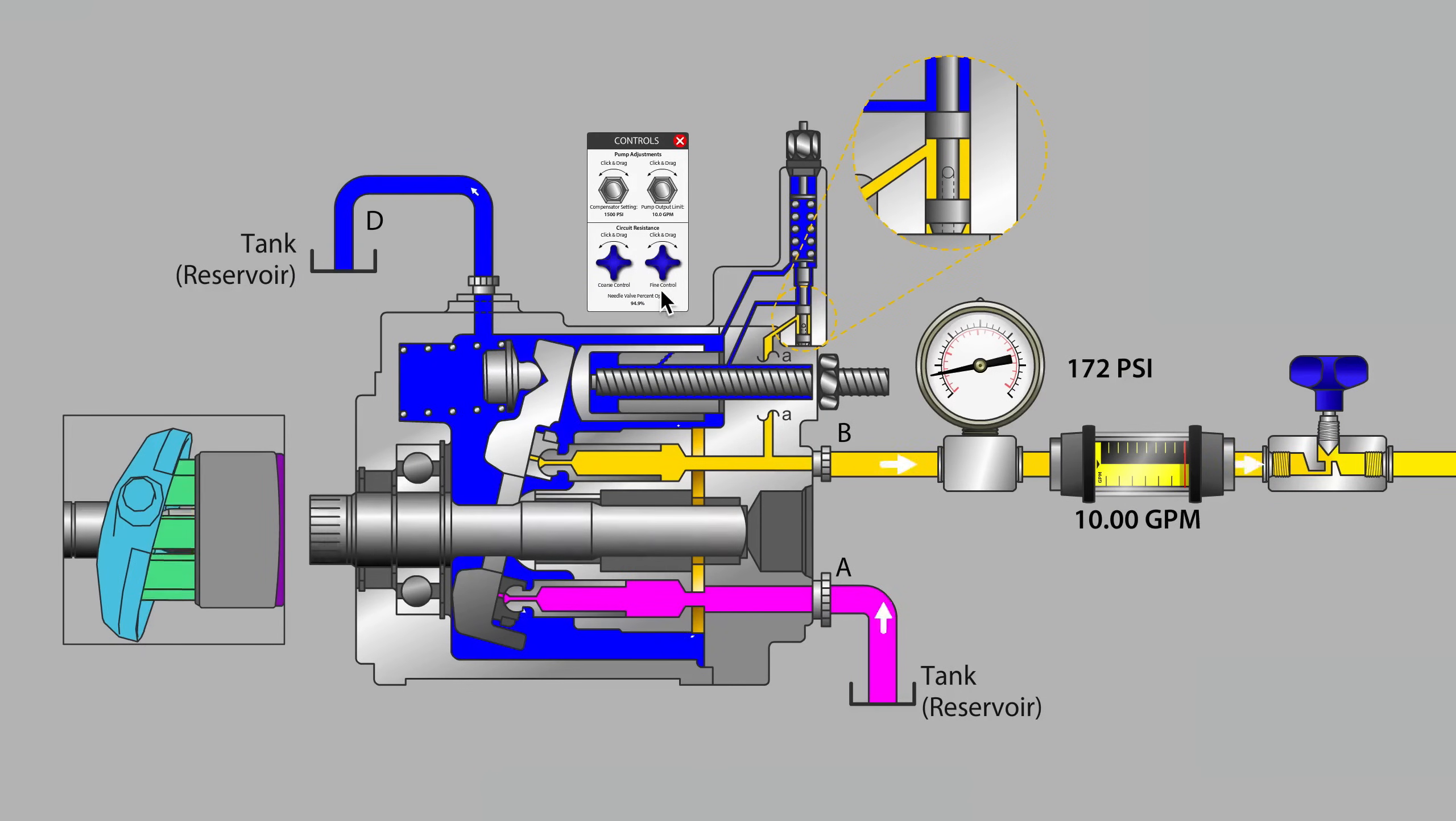So I've got the pressure compensator set to 1500 psi and remember that in this basic system we will develop system pressure just using a basic restriction on the pump's outlet, the needle valve over here on the right.